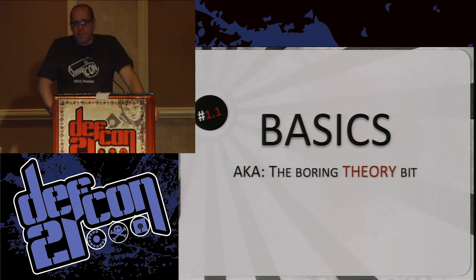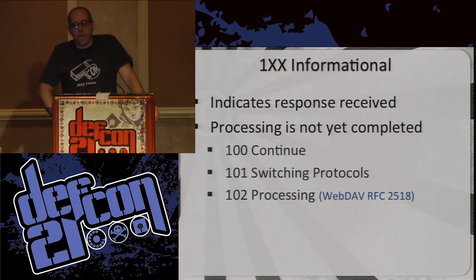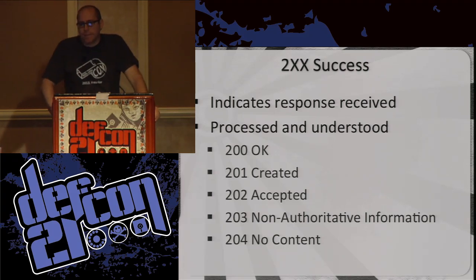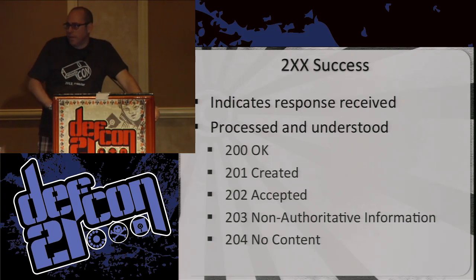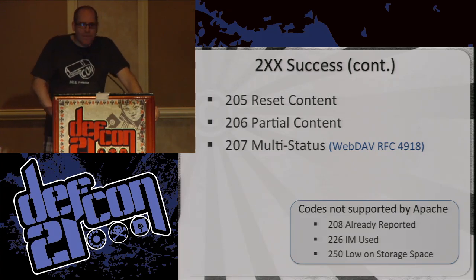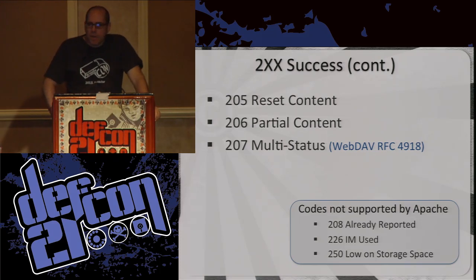Let's go through the basic stuff — this is the theory bit, it's boring, sorry. The 100 informational codes — continue, switch protocols, processing — these are things you don't get to see very much. Moving into the 200 stuff, it means it worked, it was understood. You get 200 OK, which is most of the web. You also get weird stuff you don't see much like 204 No Content — basically 'thanks for the header.' There's also some interesting stuff not supported by Apache, like low on storage space.